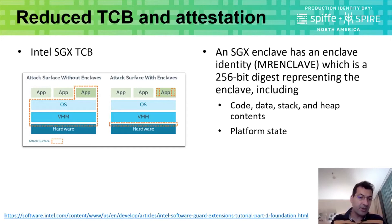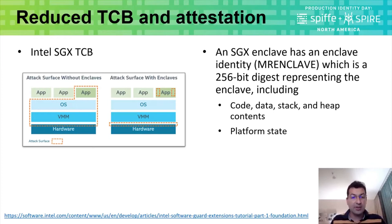Typically, you have a trusted computing base that includes not only your workload but the whole stack — the operating system, the hypervisor, and the hardware. When you start using Intel SGX, you take the operating system and the hypervisor out of the trusted computing base, resulting in a much reduced TCB.